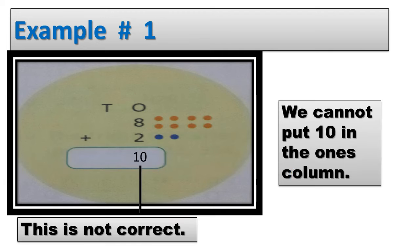Here we have some examples. Let's come and solve. Look at this sum. In this, we will add 8 and 2. It is an easy sum. Here we have 8 balls and 2 more balls. Do you know how many balls all together? Let's count. Count with me.